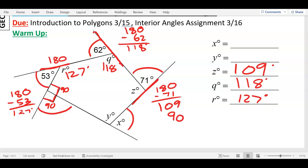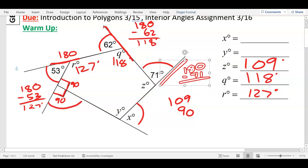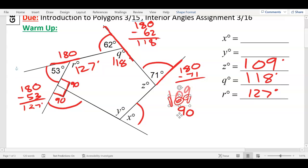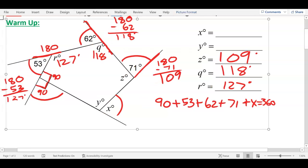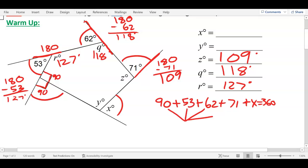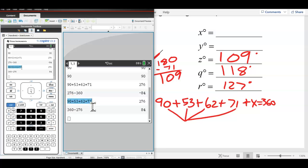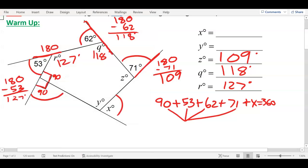So let me write it out as a big equation. 90 plus 53 plus 62 plus 71 plus X equals 360. Now I'm going to add these four angles together. What is 90 plus 53 plus 62 plus 71? So I did it earlier, and I got 276. So I'm adding the four outside angles I know. I get 276.